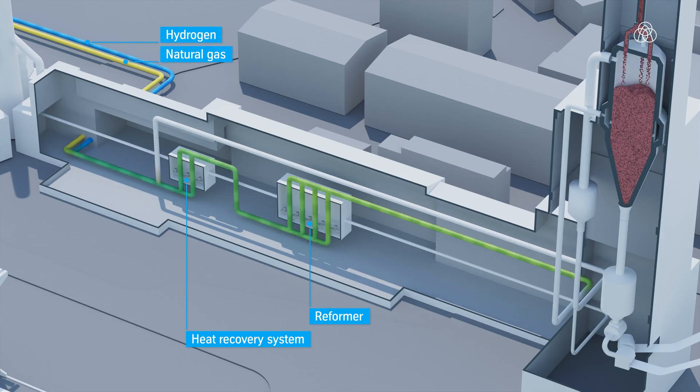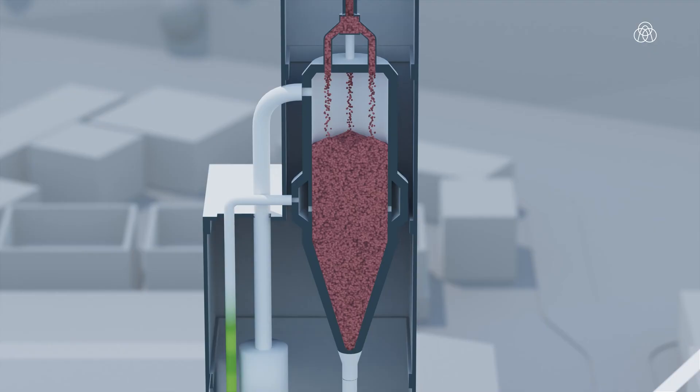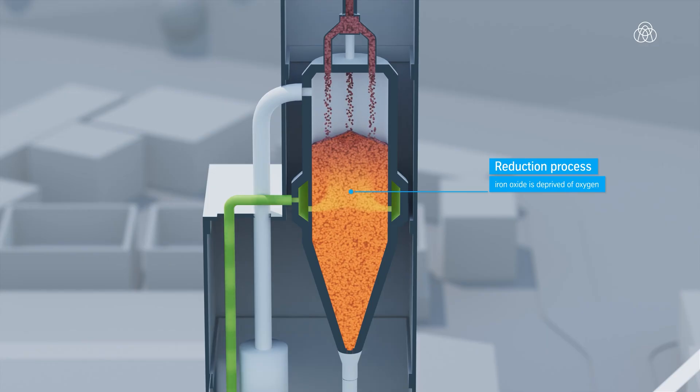This gas stream is then fed into the direct reduction tower. In the furnace, the oxygen is stripped of the iron oxide in the subsequent chemical reaction at temperatures between 700 and 900 degrees Celsius. This produces what is called sponge iron, which is initially still in solid form at this stage in the process.